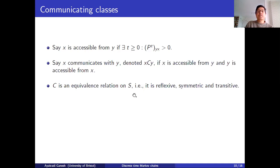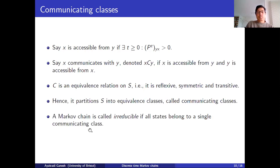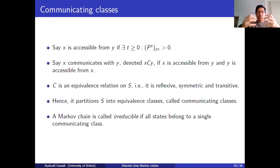Since the relation is reflexive, symmetric, and transitive, it's an equivalence relation. Communication is an equivalence relation on the state space, which implies it imposes a partition of the state space into equivalence classes — we call these communicating classes. We call a Markov chain irreducible if all its states belong to a single communicating class, meaning every state communicates with every other state: it's possible to get from anywhere to anywhere else and back.